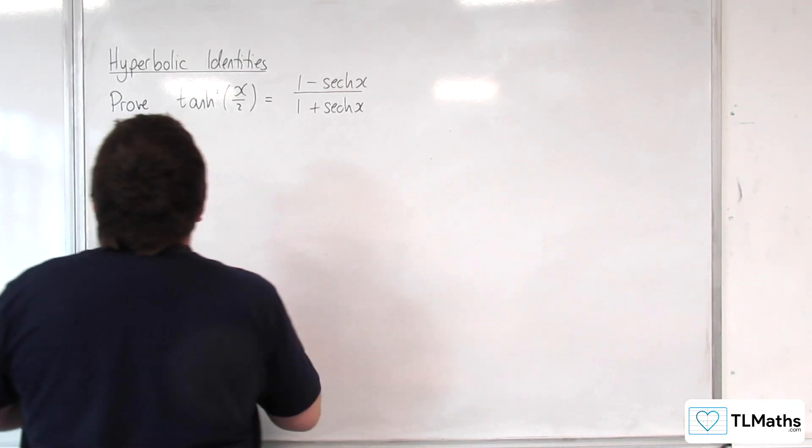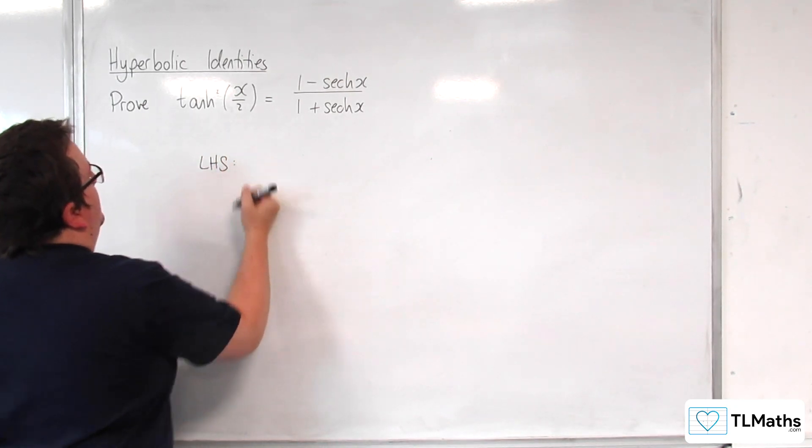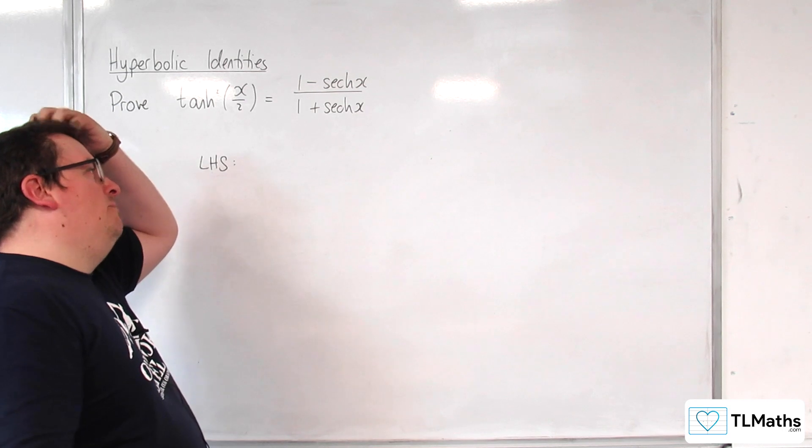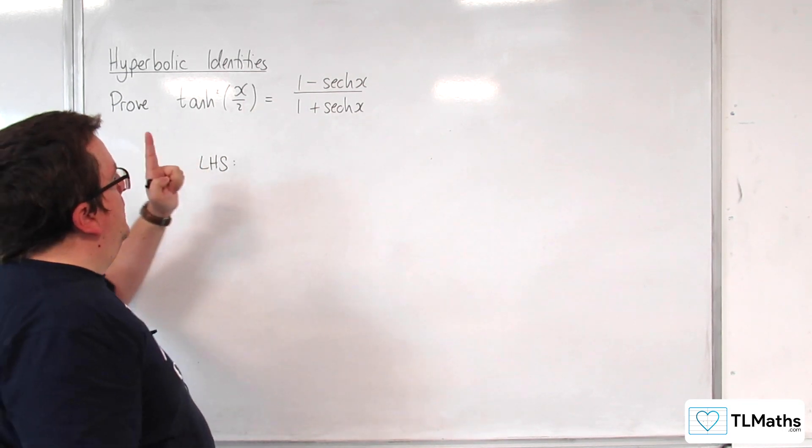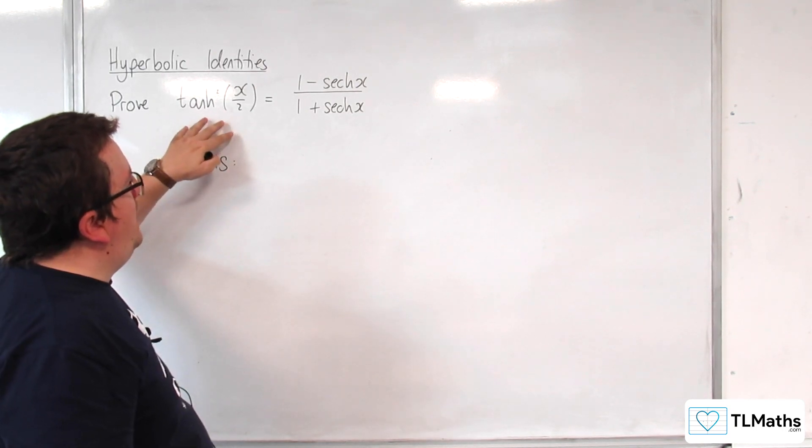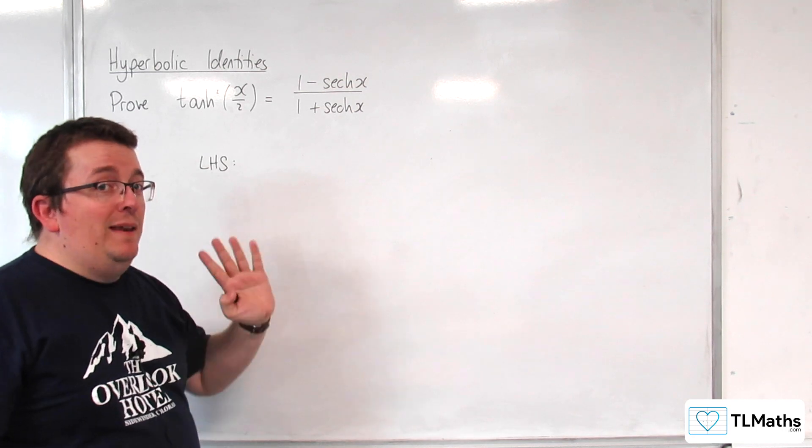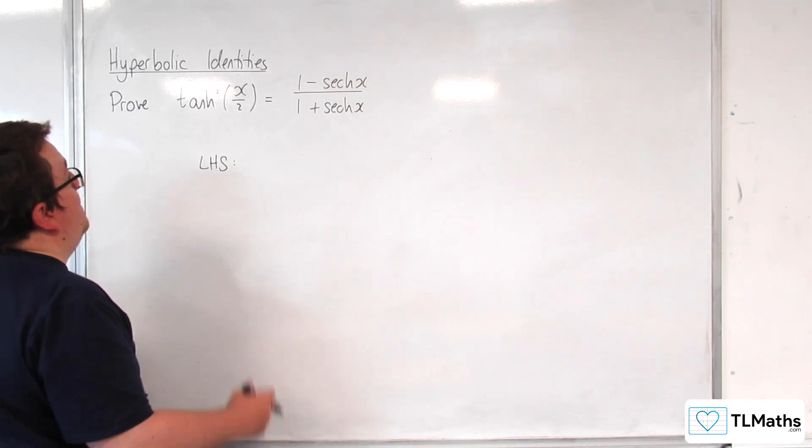This one I'm going to start with the left hand side. It looks like you probably need to have more to do on the right hand side, but because of that x over 2, it's probably best that we want to get this in terms of just x. And so, maybe a left hand start will be better for us.